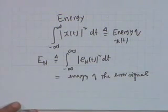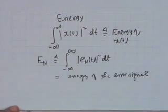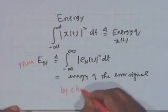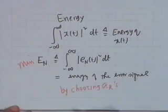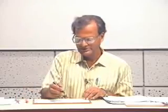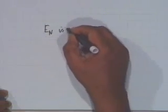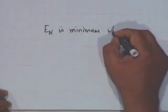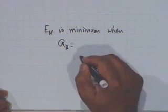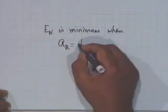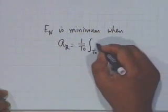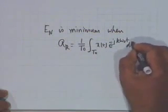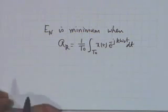The task we have set ourselves is to minimize E_N by choosing the a_k's. The mathematical development is not very complicated, but to avoid digression I will skip it and simply state the result: this minimization problem has been solved, and E_N is minimum when a_k is given by the same formula as the Fourier series coefficients — namely, (1/T0) times the integral over T0 of x(t)·e^(−jkω₀t) dt. This is an extremely interesting result.